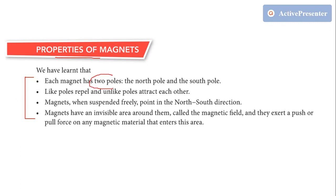First property: each magnet has two poles — one is called north pole and another one is called south pole. So if I take any magnet, that magnet would have two poles: one is called north and another one is called south. This bar magnet has one north pole and one south pole.